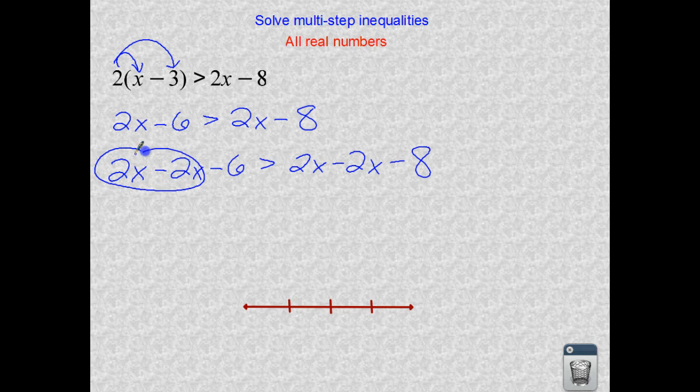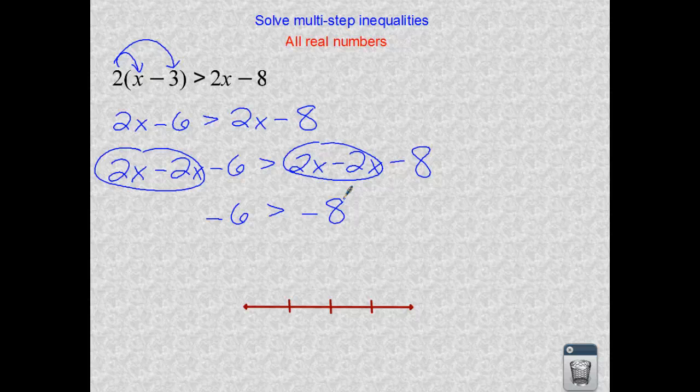Now it's gone on the left, so we have negative 6, our symbol, and then negative 8. So we're left with two integers, and it says negative 6 is greater than negative 8, which that is a true statement.